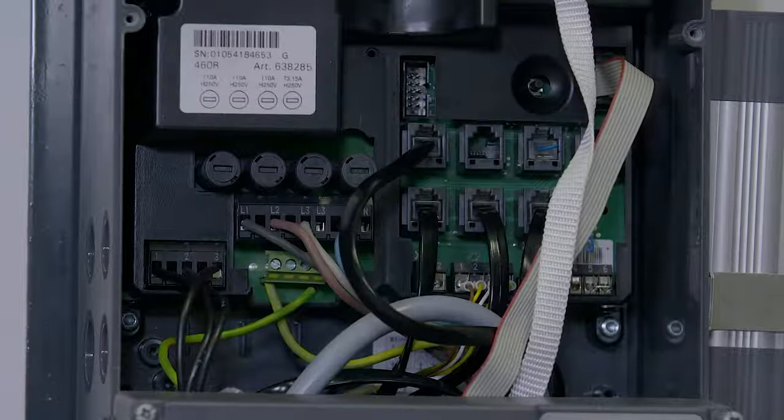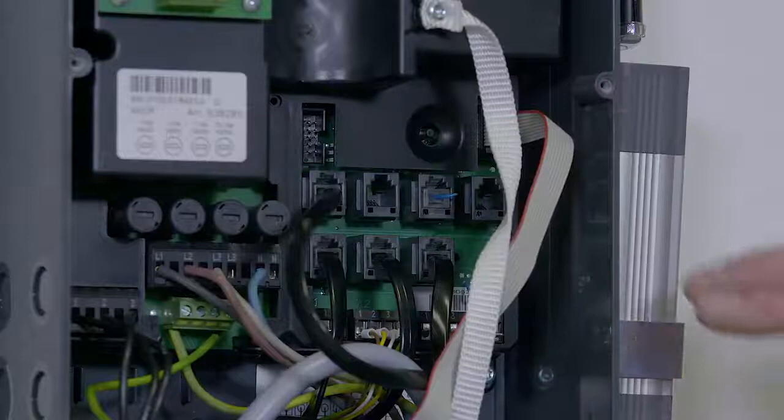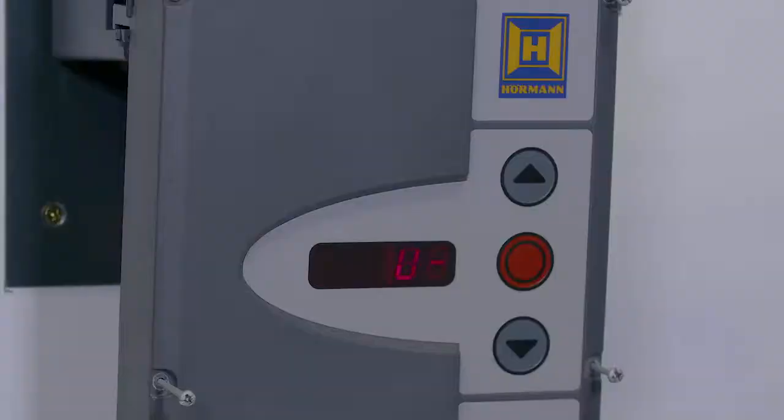Next we move on to programming. Inside the control box we have a round recess with the programming button in the top limit. Press and hold for three seconds and the display will change to zero zero.